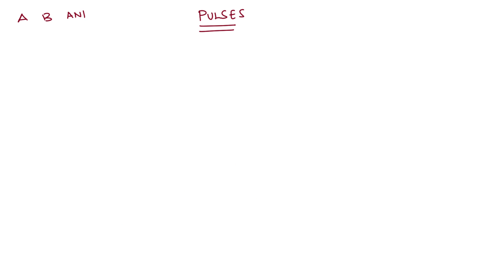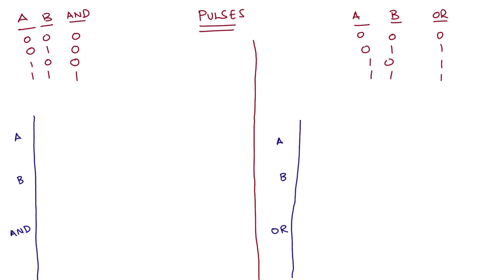One question that gets frequently asked is to draw the waveforms of pulses for given gates. For that, first let us write down the truth tables of both the gates. Let me just mark the graph. A and B are our inputs, and AND and OR are our outputs. Marking dots to make sure that they are evenly spaced.